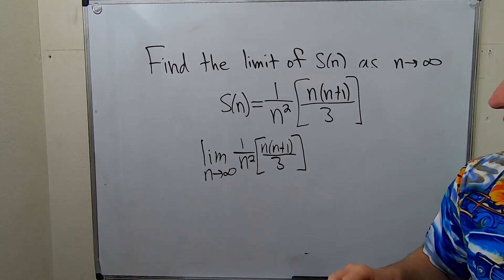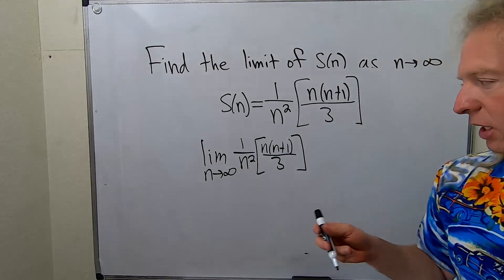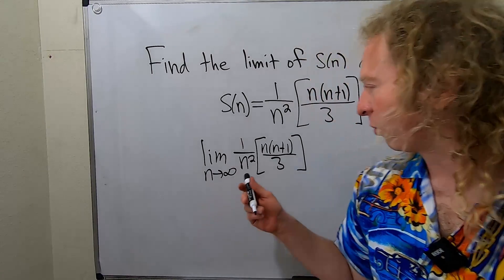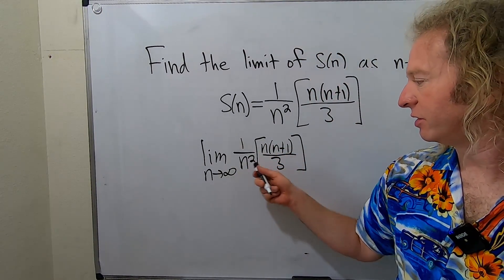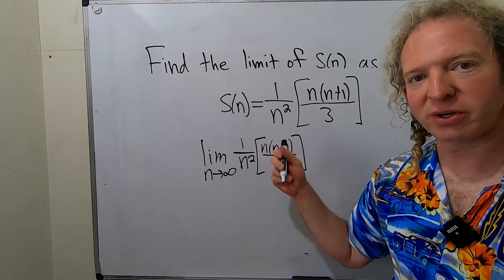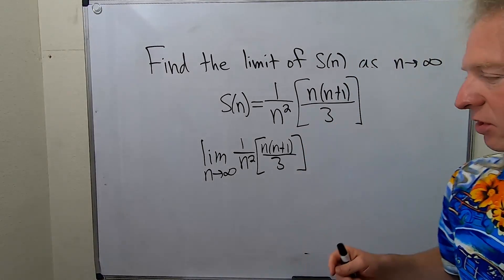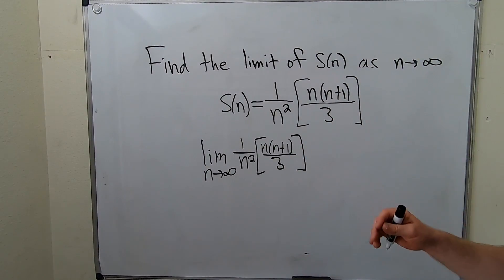Good stuff. Okay, so basically you just have to look at the leading terms. Remember this is n squared and this is n squared. So it's n squared over n squared. So they both have the same degree. So the answer is going to be the ratio of the leading coefficients.